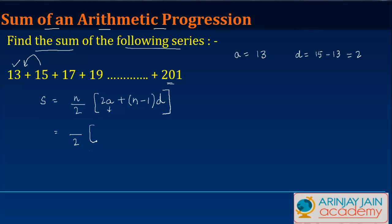So basically what I have here is 2 times a is 13, so I get 26, plus n minus 1 times d which is 2. But the thing is, I don't know what is the value of n. How many terms are there in this arithmetic progression?